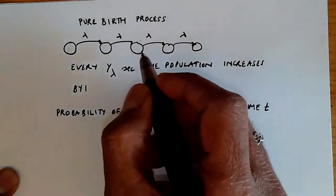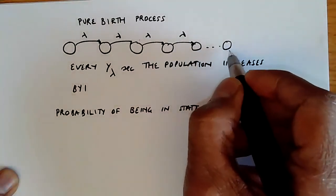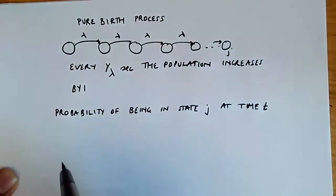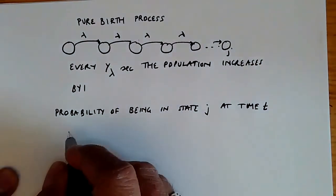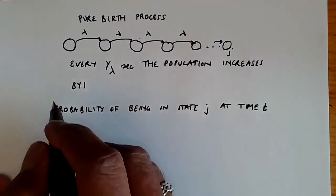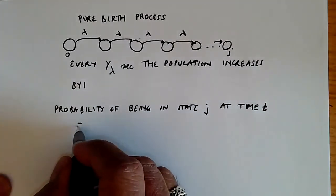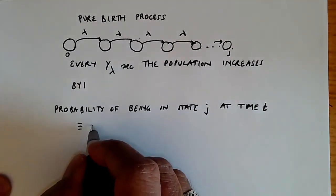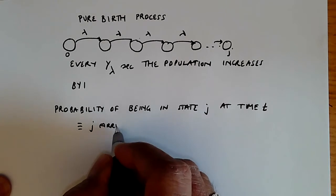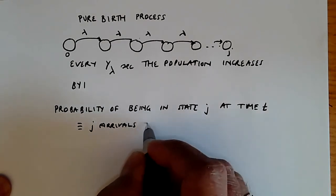Say this is state j somewhere over here. How do we get here? Well, we get to state j if we have j arrivals, because we start at 0. So this is equivalent to j arrivals in time t.